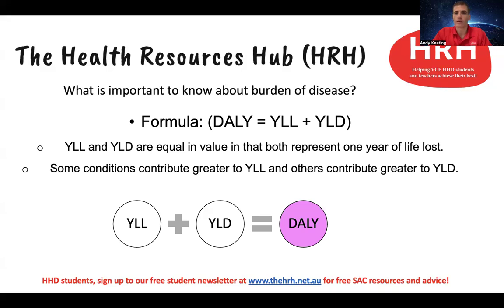Whereas another condition, perhaps like mental health conditions or mental ill health, people are more likely to live with that condition than die prematurely from it. So the DALY calculated for it might be greater for the YLD compared to the YLL. But for all conditions, both YLL and YLD contribute to the overall burden — the overall DALY — for that particular condition.